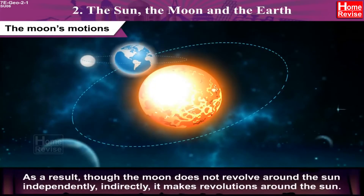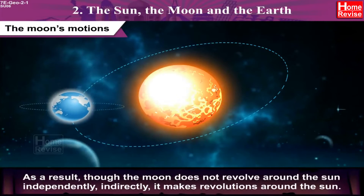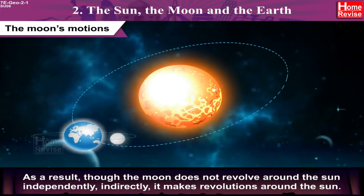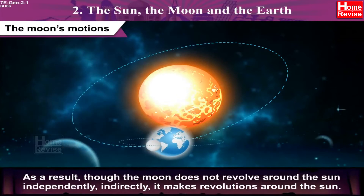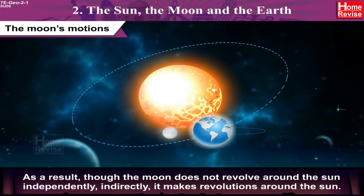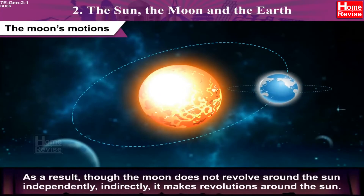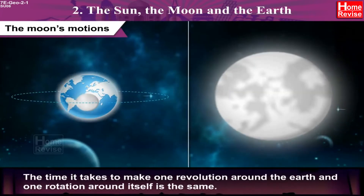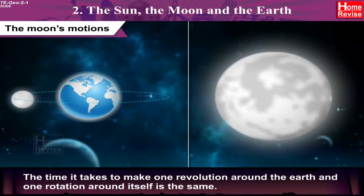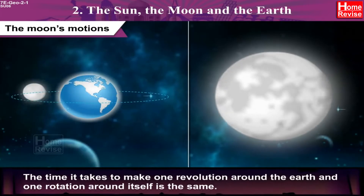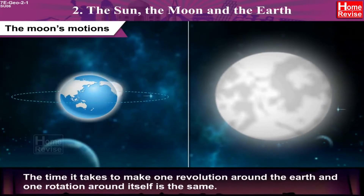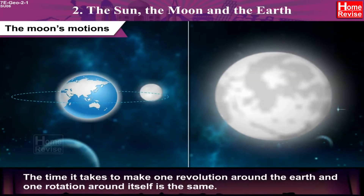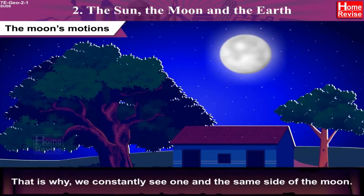As a result, though the Moon does not revolve around the Sun independently, indirectly it makes revolutions around the Sun. The time it takes to make one revolution around the Earth and one rotation around itself is the same. That is why we constantly see one and the same side of the Moon.